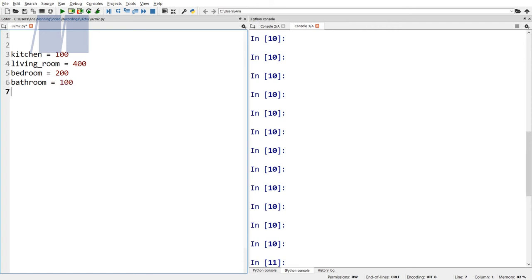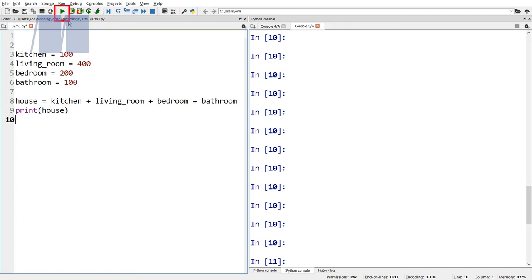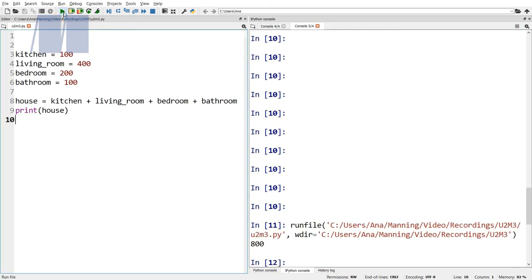Now write a line of code that's going to calculate the total square footage of the house by adding the individual square footage of all four rooms. I can make a variable house equals kitchen plus living underscore room plus bedroom plus bathroom. As a final step, let's print the result using print open parentheses house close parentheses. Now let's run the program by clicking the green arrow, which shows our total square footage.